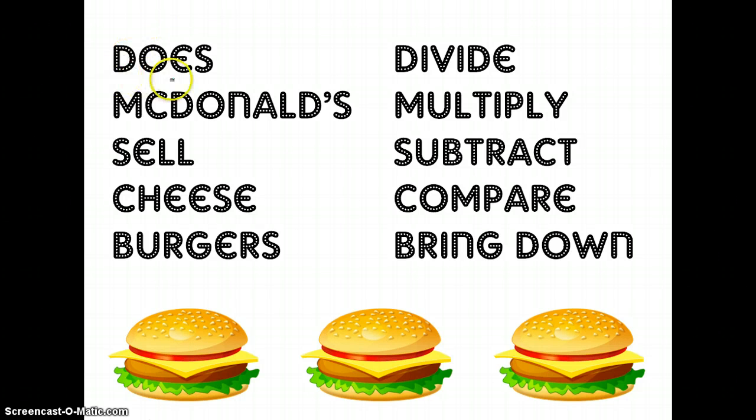When we think about does, we're going to remember that the D stands for divide. When we think about McDonald's, we're going to remember that the M stands for multiply. Sell, the S stands for subtract. Cheese, the C stands for compare. And burgers, the B stands for bring down. Once you've done all that, you just start right back over at the beginning and keep going.